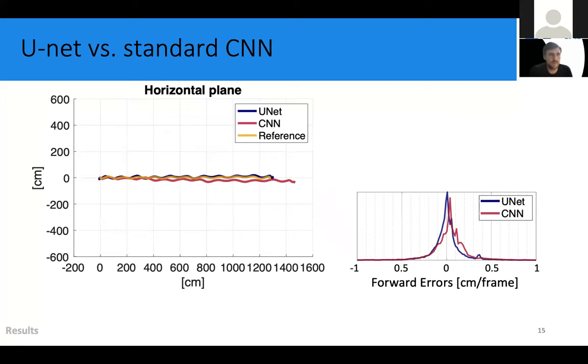So here's, let's go to some results. So what we see here is a comparison of the horizontal trajectory of a character walking along a straight line, as it is estimated by two different network types, as well as the ground truth in yellow. So the blue line is the trajectory estimated using our U-Net architecture. The red line is the trajectory estimated using a more standard four-layer convolutional network.